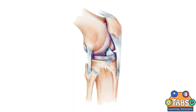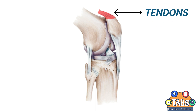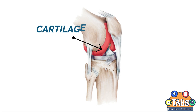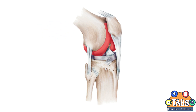Muscles are attached to the bones by tough cords called tendons. Tendons are strong, dense, flexible bands of connective tissues at the end of the muscles. Cartilage are supportive tissues found at the end of the bones. They protect and support the bones during weight-bearing activities.